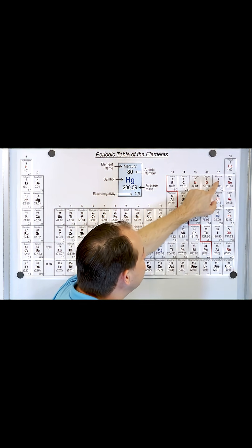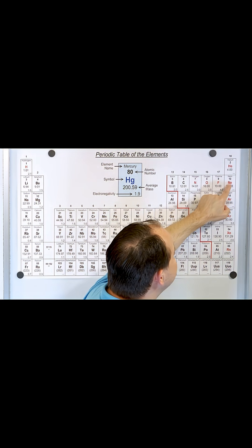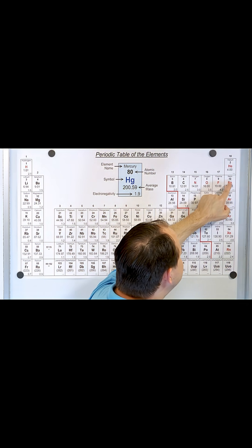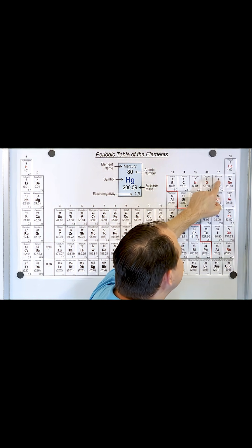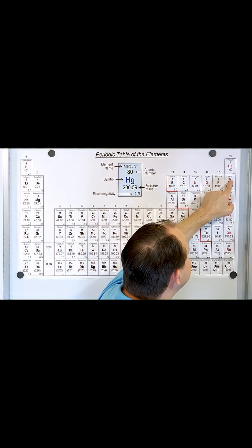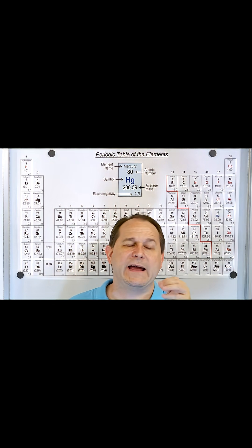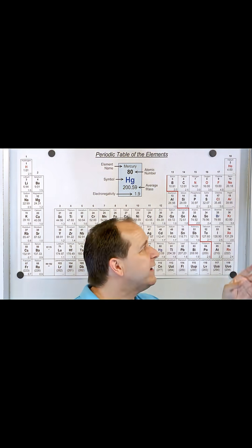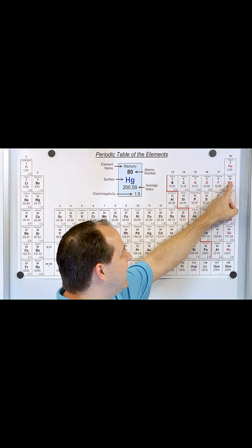Fluorine is always trying to be as close as possible to the nearest noble gas it can be, which is right here next door at neon. So if it has nine electrons, all it needs is one additional electron to have the same number and orientation of electrons as the noble gas. Everybody's trying to be like a noble gas — so what does fluorine want to do? It wants to gain a single electron.